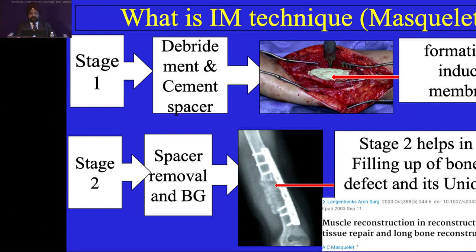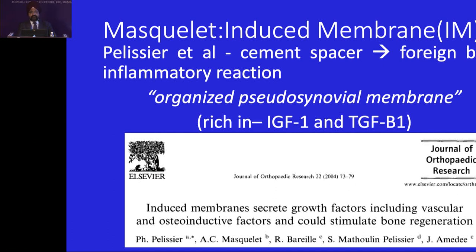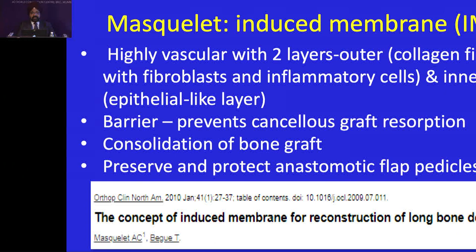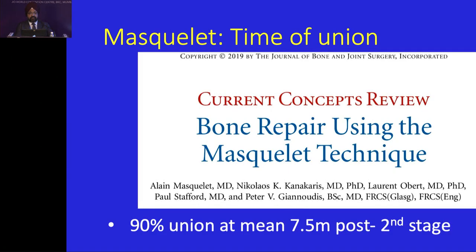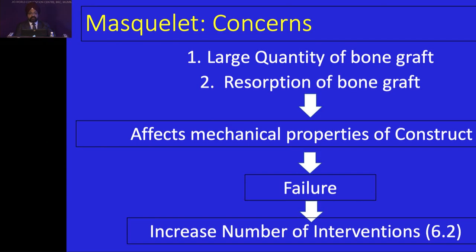At the same time, you do internal fixation and soft tissue reconstructive procedures as required. The induced membrane was basically a foreign body type of inflammatory reaction rich in growth factors. It is highly vascular, acts as a barrier to prevent cancellous bone resorption, causes consolidation of bone graft, and preserves and protects anastomotic flap pedicles. According to Masquelet, there is no limit to the size of defect — at least up to 25 cm have been treated successfully. Union was 7.5 months post second stage.